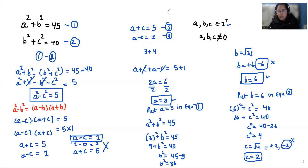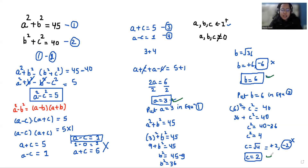So the three values are: a equals 3, b equals 6, and c equals 2. I hope it's clear and you find it useful. Please give us a thumbs up and do subscribe to my channel. Stay tuned.